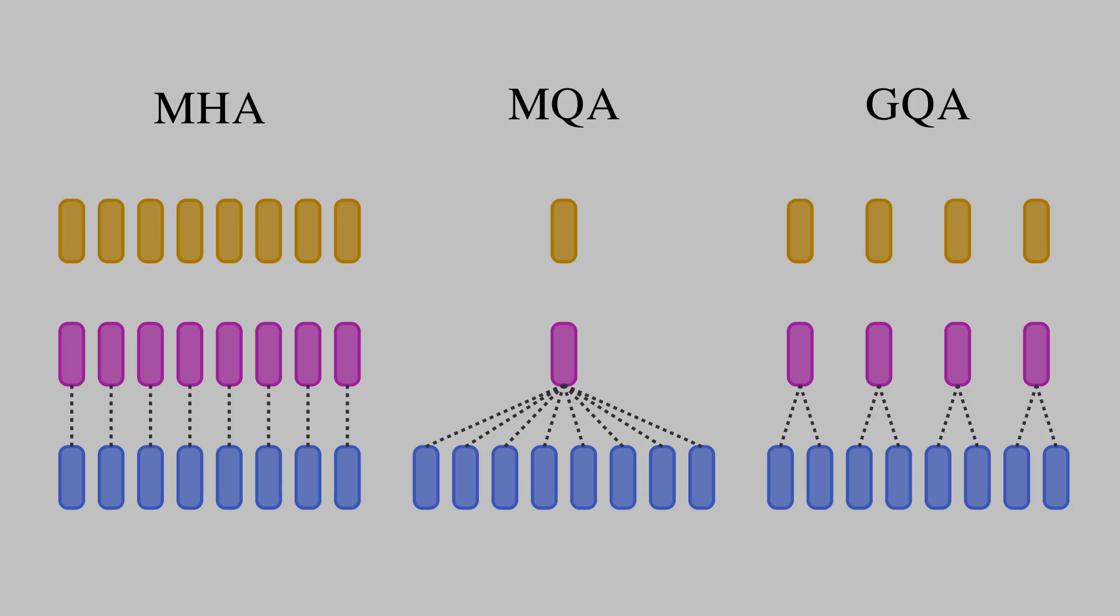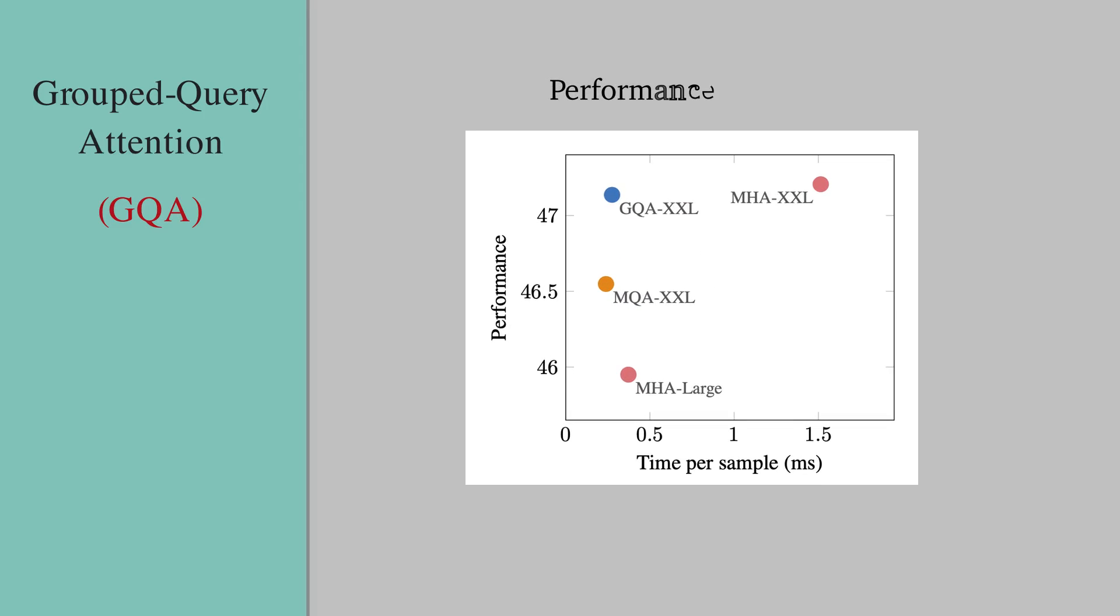If we choose to have just one subgroup, that is identical to MQA. And if we choose the number of subgroups to be equal to h, that would be identical to MHA.